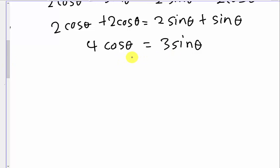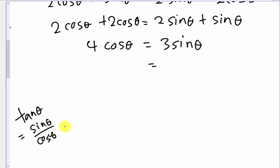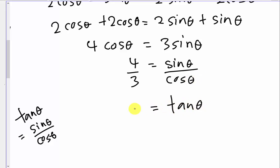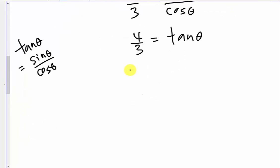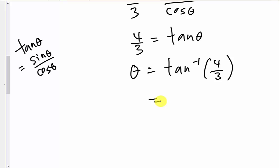I'm almost done. Since tan θ equals 4/3, then θ equals arctan(4/3). Making sure the calculator is set to radian mode, I press shift-tangent and then 4 over 3. I get the answer: θ equals 0.927 radians.